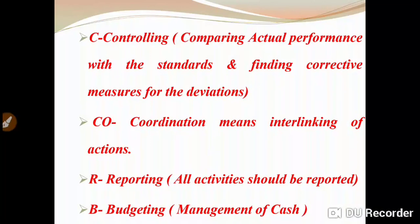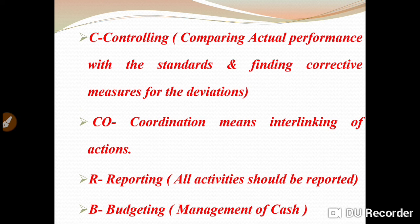Next is C — Controlling. Controlling mein kya hota hai ki hum actual performance aur humare standards ko compare karte hain. Standards matlab humare predetermined goals — for example, one individual will produce 10 units per hour. When actual performance is measured, if that person produced only 8 units, then the 2-unit difference is called a deviation. This deviation is the difference between actual performance and the standard. We find reasons behind these deviations and take corrective measures to improve them — that is controlling.